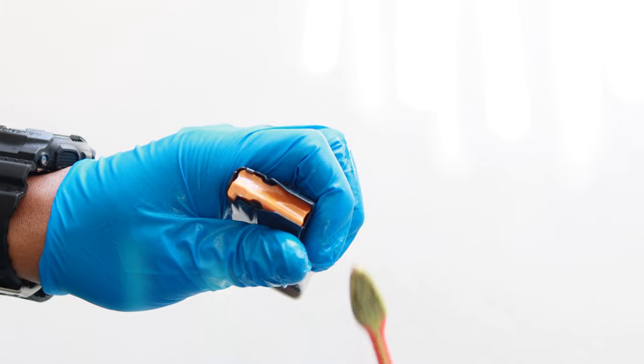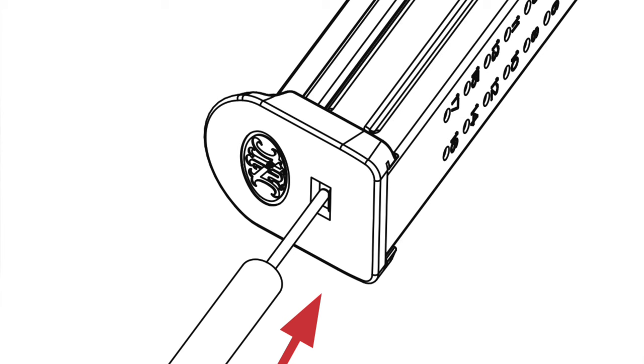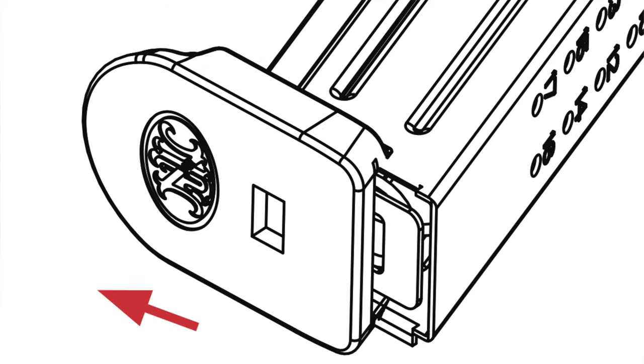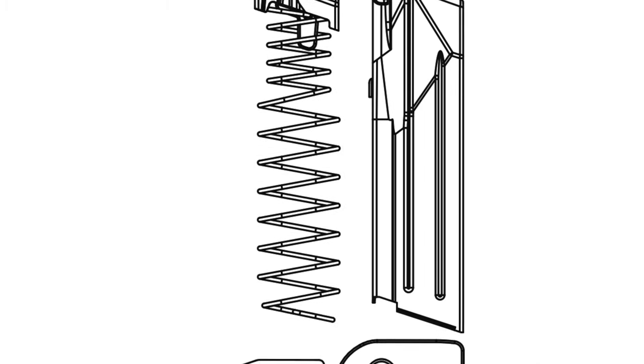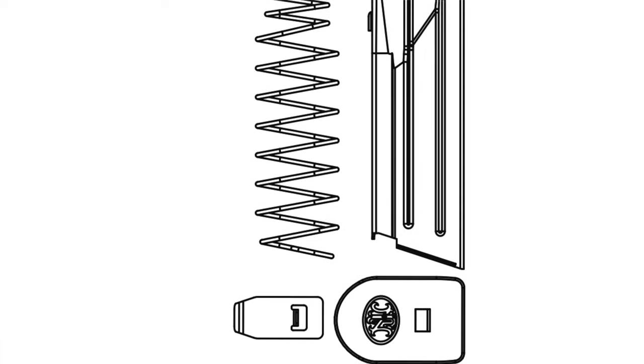If you do need to take it apart, it's simple enough. You probably don't need a video to show you how to do it. You just press that little button at the bottom of the base plate, then slide it off. Once you do that, all the magazine components will come out. Clean them off and just put them back in the same way you took them out. It's simple enough.